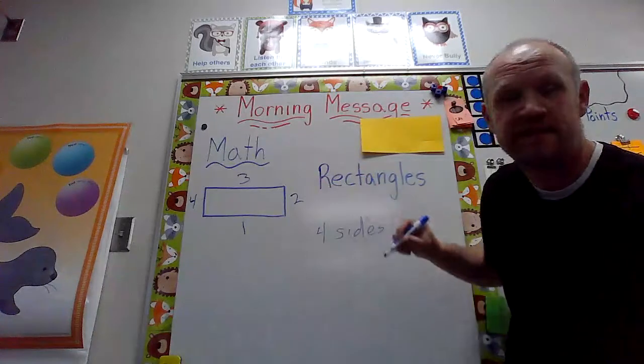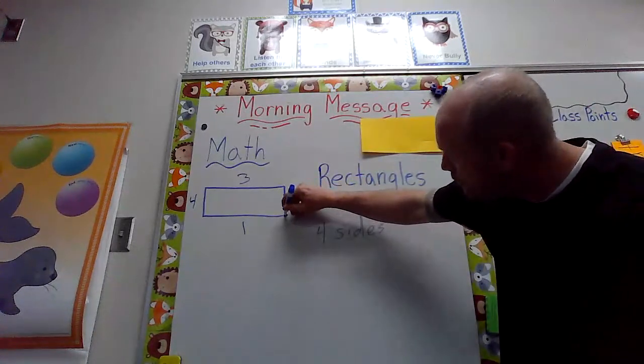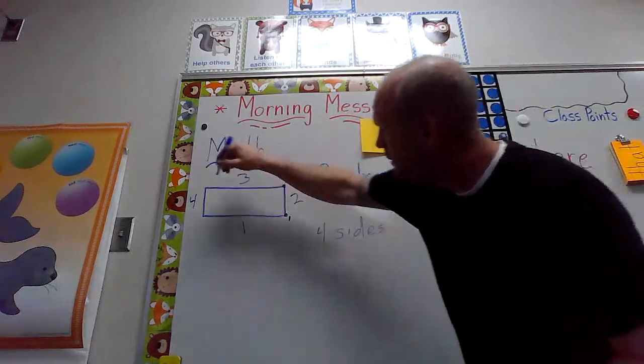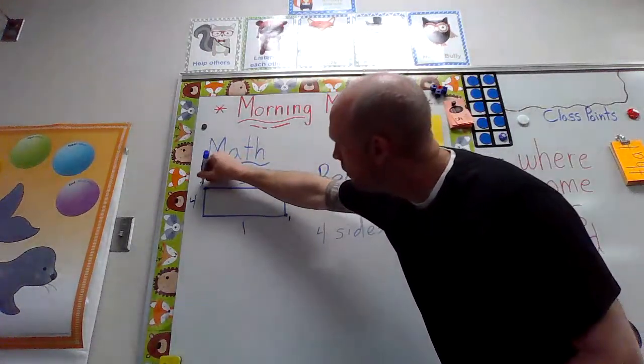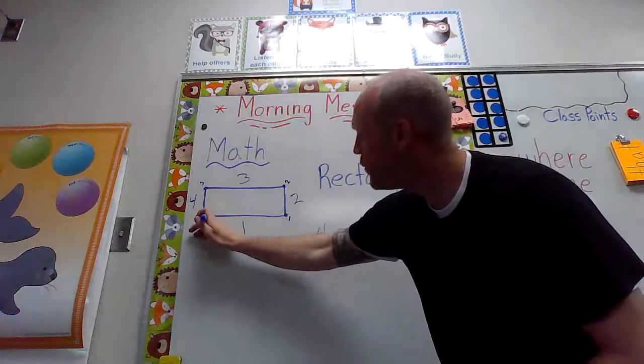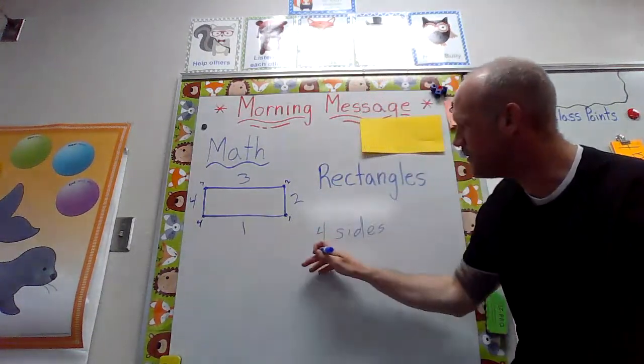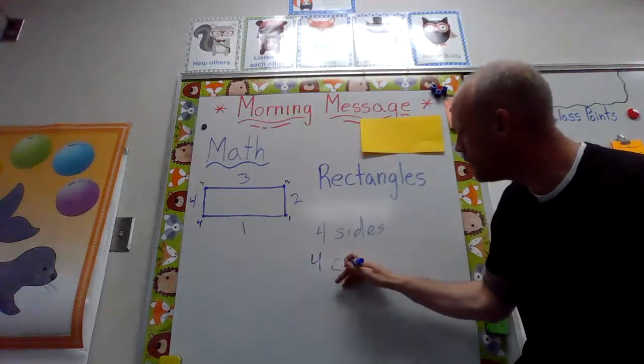Oh, that's where the sides meet! So we have one, two, three, and four corners in our rectangle. So we have four corners too.